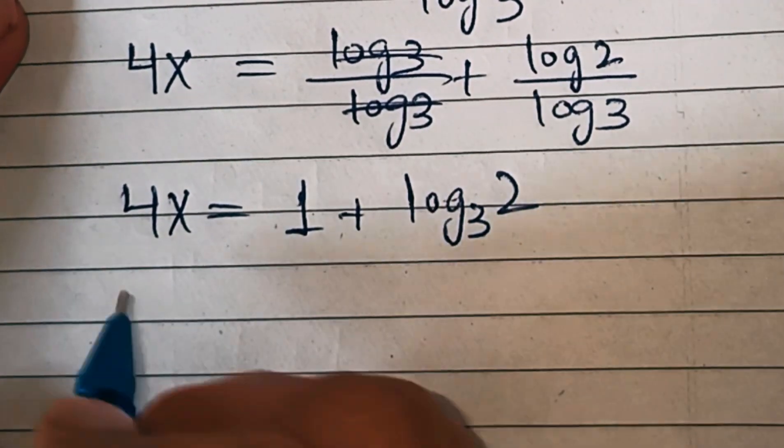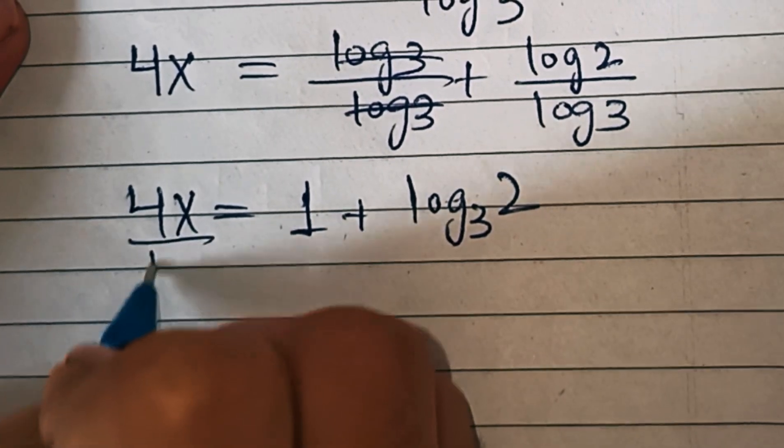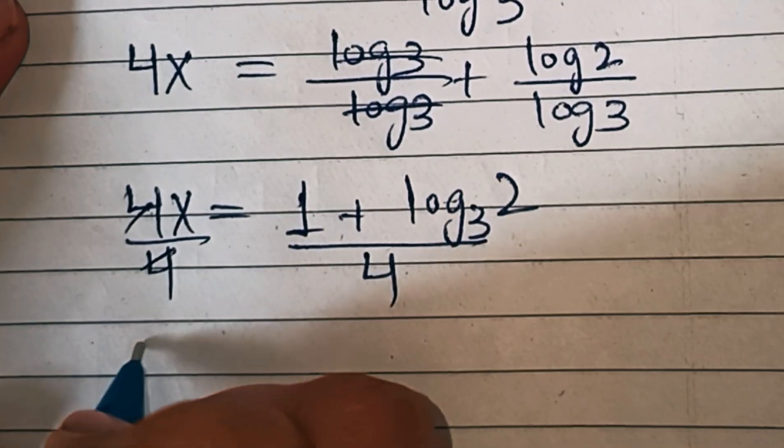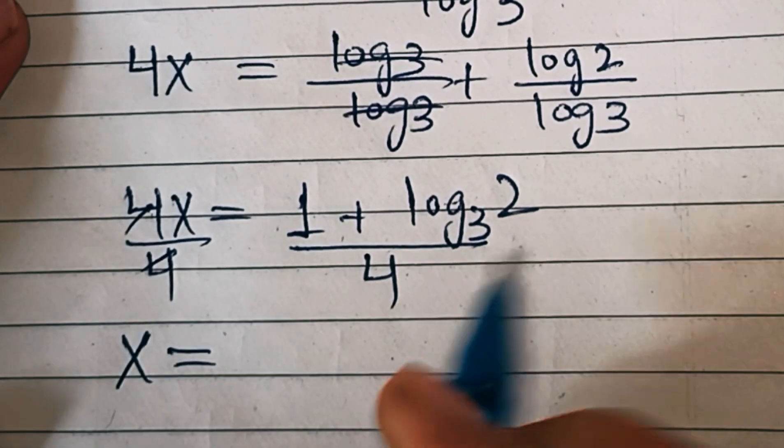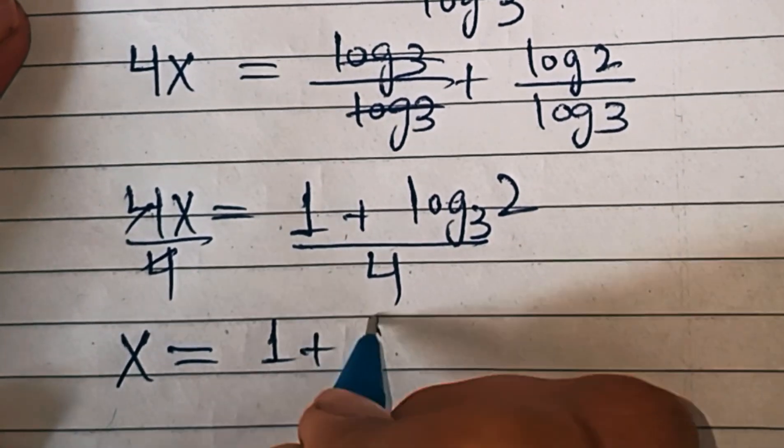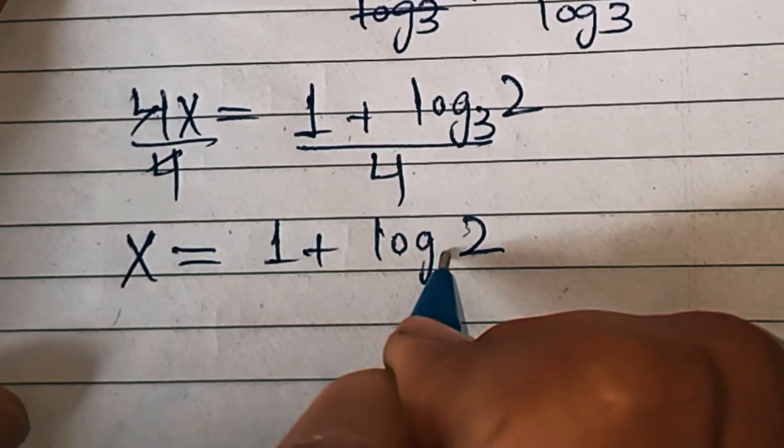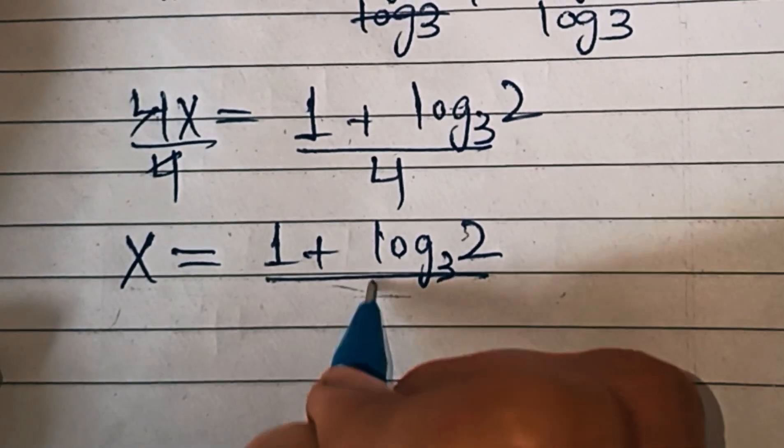In the next step we'll divide both sides by 4, so the 4s cancel out. We have x equals 1 plus log of 2 to the base 3 over 4. This is our final answer.